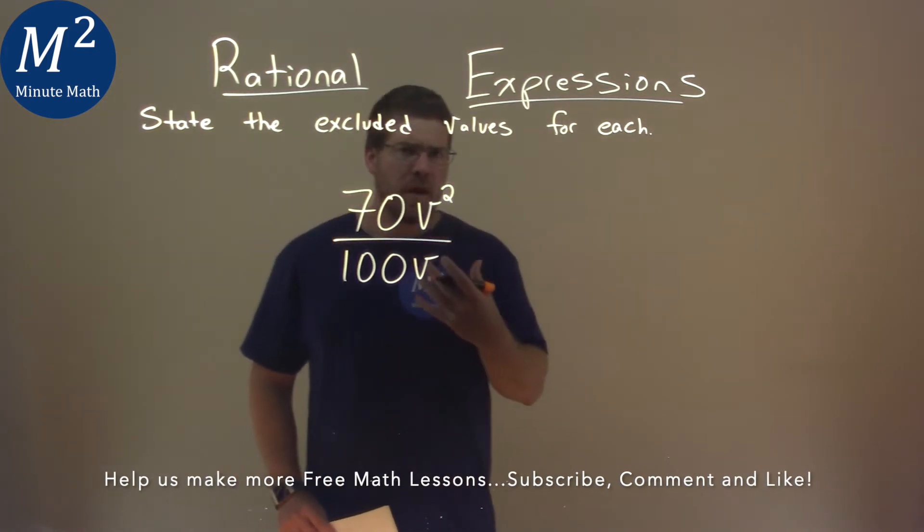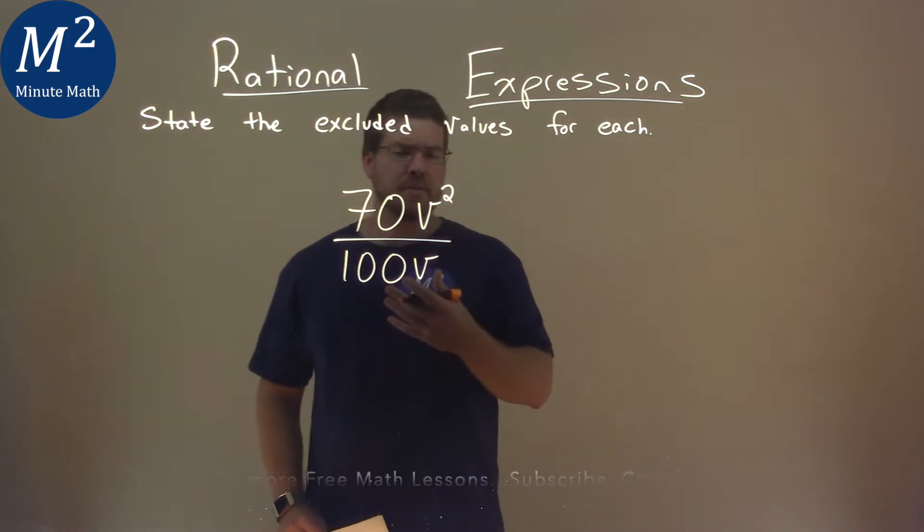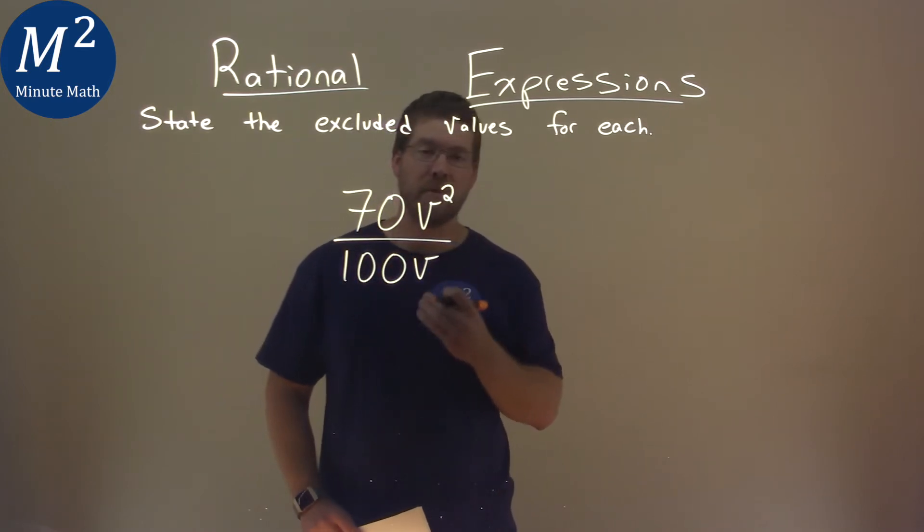Well, the excluded value, with rational expressions, we're trying to find where the denominator is equal to zero, knowing we cannot divide by zero.